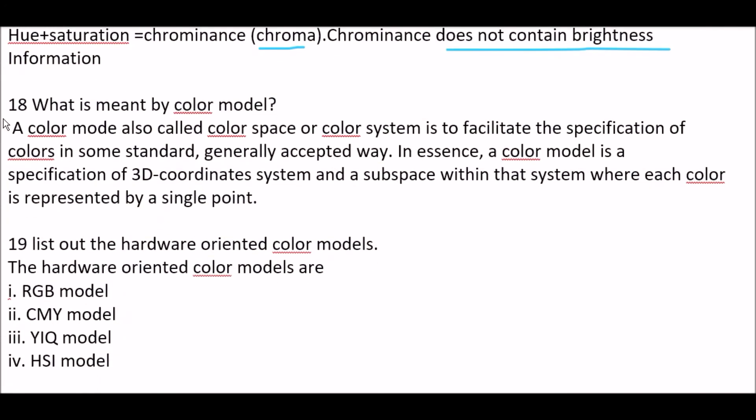Next question. What is meant by color model? Very important. A color model, also called color space or color system, is to facilitate the specification of colors in some standards, generally accepted way. A color model is a specification of 3D coordinate system and a subspace within the system where each color is represented by a single point.